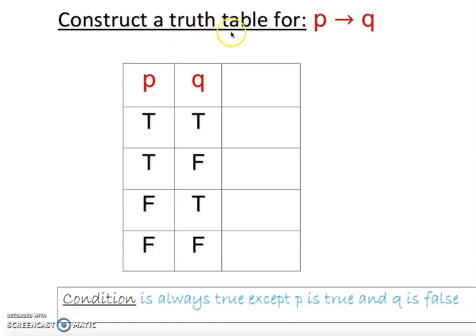In this video, we're going to construct a truth table for a conditional. The conditional is given as if p then q. That's how we read it: if p then q. How do we come up with a truth value for the conditional? The condition is always true except when p is true and q is false.